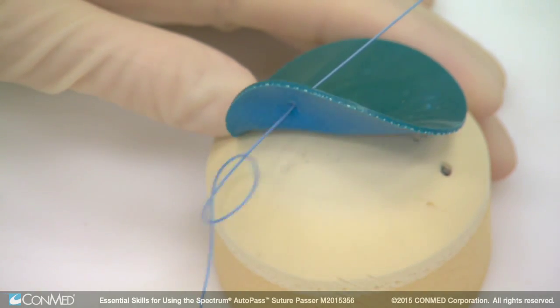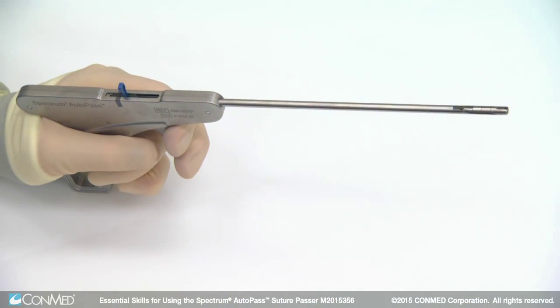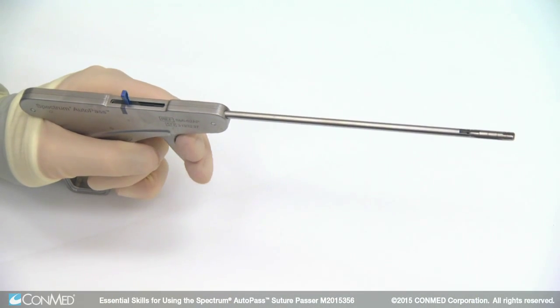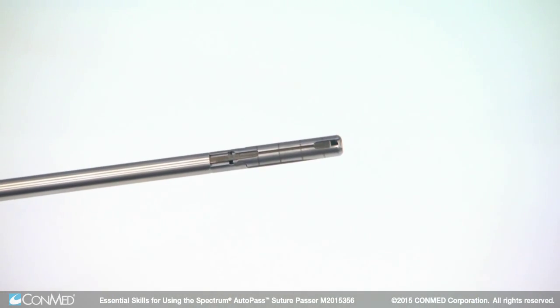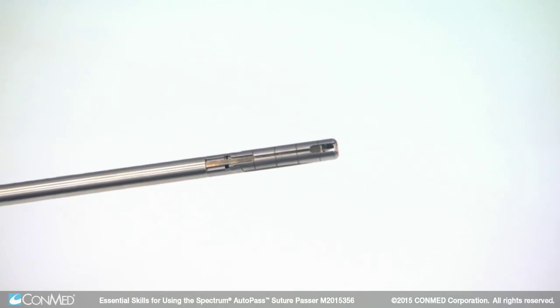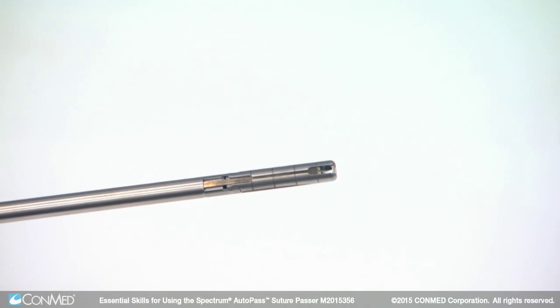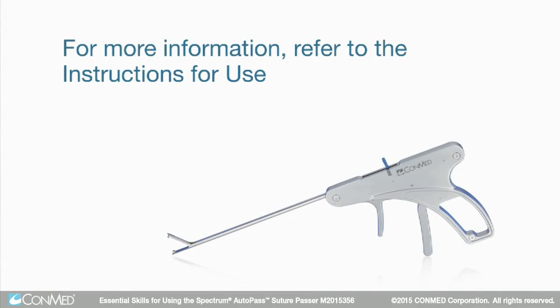When releasing the suture from the trapdoor, squeeze the trigger only 4 or 5 millimeters. This opens the trapdoor but prevents the needle from unnecessary bending, which prolongs needle life.